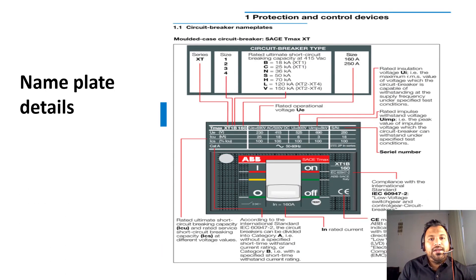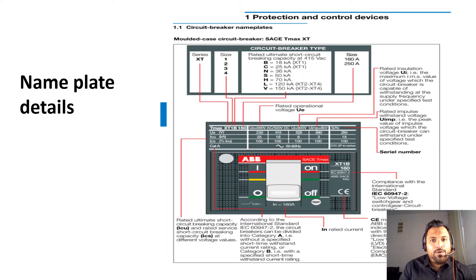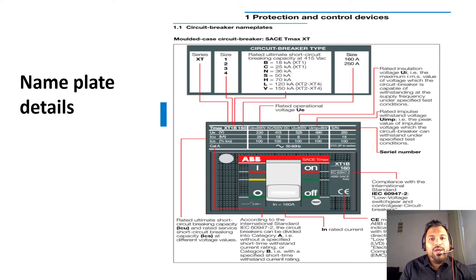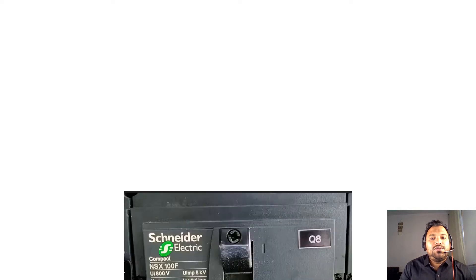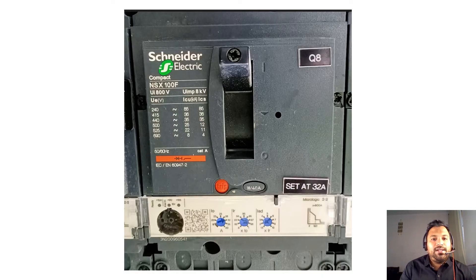Just as humans and electrical or mechanical equipment have name plates, from the nameplate details we can understand what kind of equipment it is, what its name is, and its voltage and current parameters. Part 2 covered the current parameters, and Part 3 is going to cover the voltage parameters. Here is a sample circuit breaker we'll be referencing.